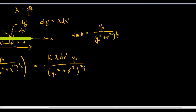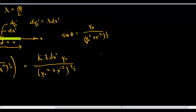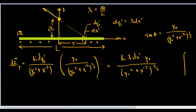Here's what it would look like. We can pull out k, lambda, and y-naught because y-naught is a constant — no matter where we are along the charge, the y-naught component is the same. Also, instead of integrating over the entire length, why not just integrate over half the length and then multiply by 2?